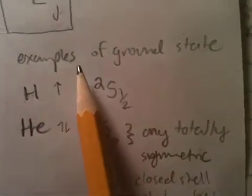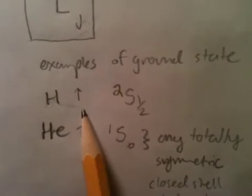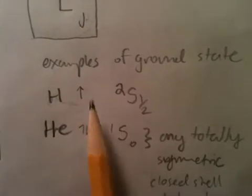Some examples. In the ground state, hydrogen has one electron, some spin, some spin, 1 half.